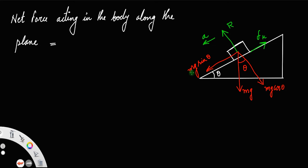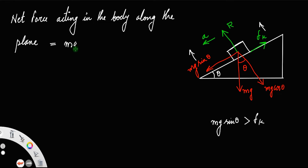Since the body is sliding down, we know mg sin theta, the downward force, must be greater than the frictional force. That is the reason why it is sliding down. So the net force will be mg sin theta minus the frictional force Fk. Let us call that net force F.